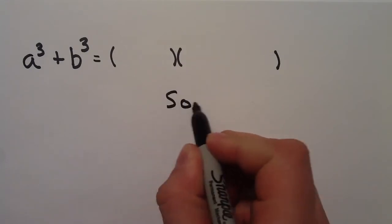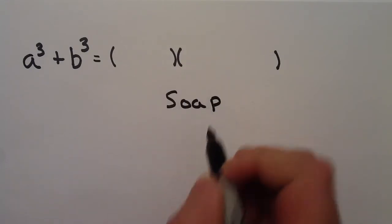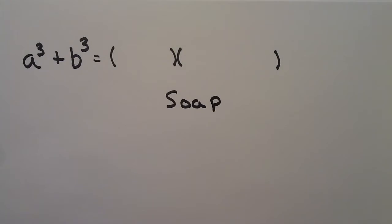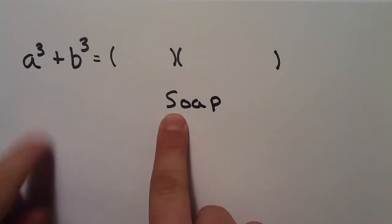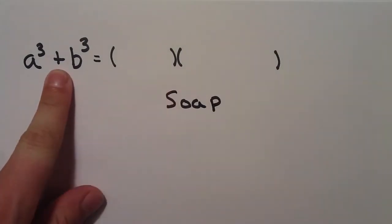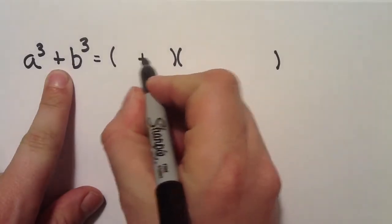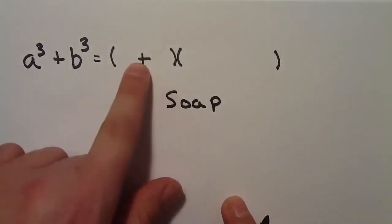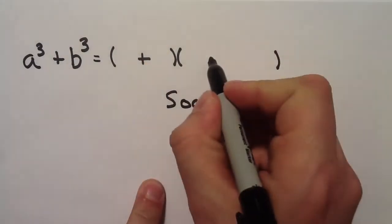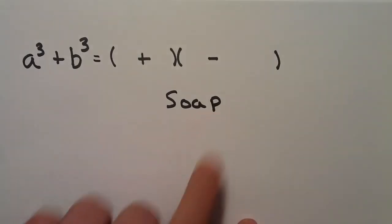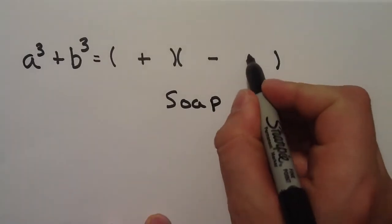Now, I remember this word SOAP, which helps to determine which signs I use. The S here means that this sign and this sign are the same, so plus and plus. The O means that this sign and this sign are opposite. And the AP means that this last sign is always positive.